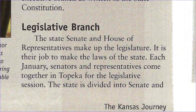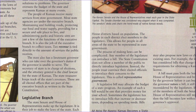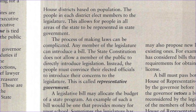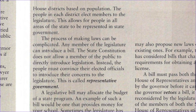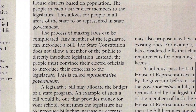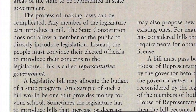Legislative branch. The state Senate and House of Representatives make up the legislature. It is their job to make the laws of the state. Each January, senators and representatives come together in Topeka for the legislative session. The state is divided into Senate and House districts based on population. The people in each district elect members to the legislature. This allows for people in all areas of the state to be represented in the state government. The process of making laws can be complicated.